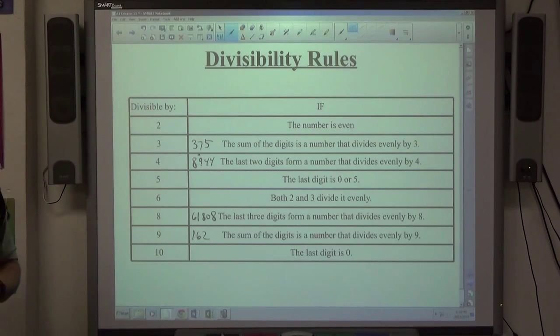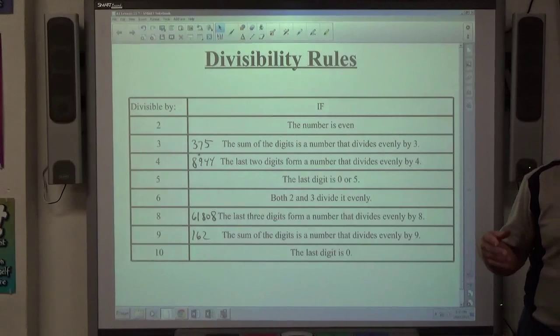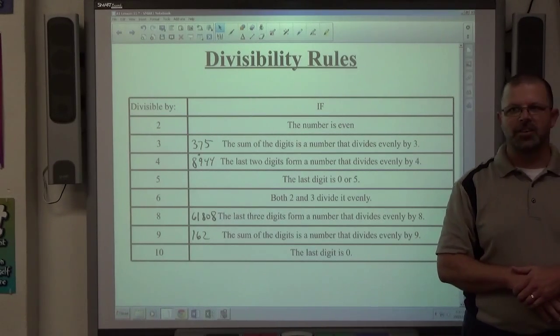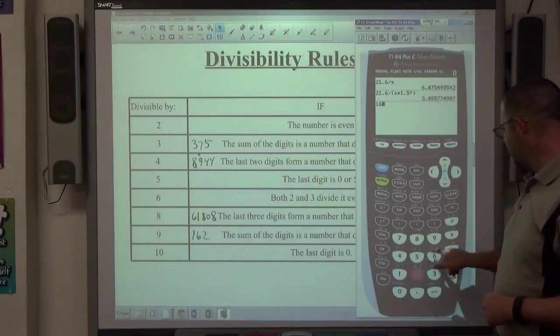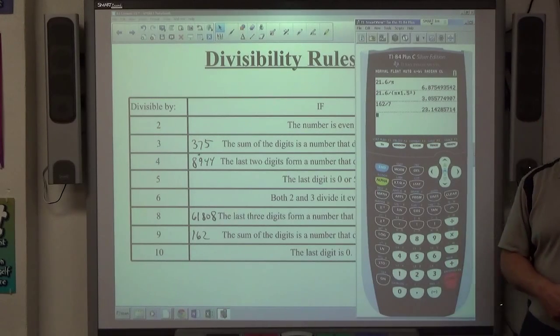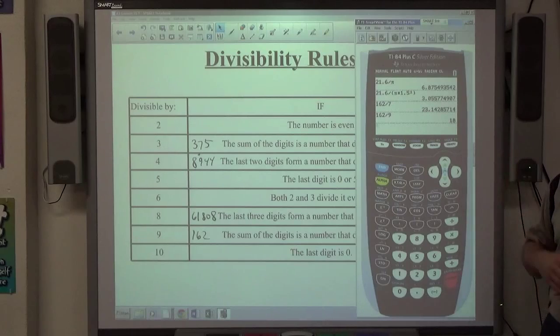10, the last digit is 0. There's a rule for 11, I'll skip it, because the other rule is using a calculator. Type your number divided by the number you're testing, comes out as a decimal, doesn't divide evenly. For example, if I try 162 and divide by 7, doesn't divide by 7. 162 divided by 9, it does divide by 9. In fact, it divides by 9 twice.